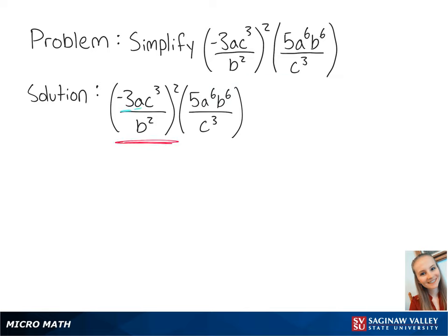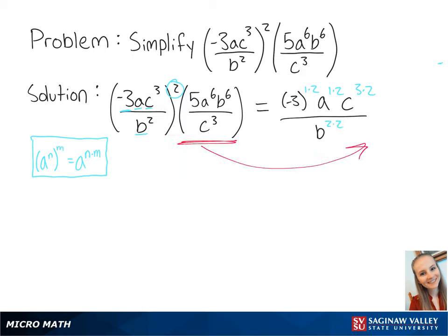Each term in the expression is being raised to the second power. Using our exponent rules, this gives us negative 3 to the 1 times 2, times a to the 1 times 2, times c to the 3 times 2, all over b to the 2 times 2. The second part will remain the same for now.